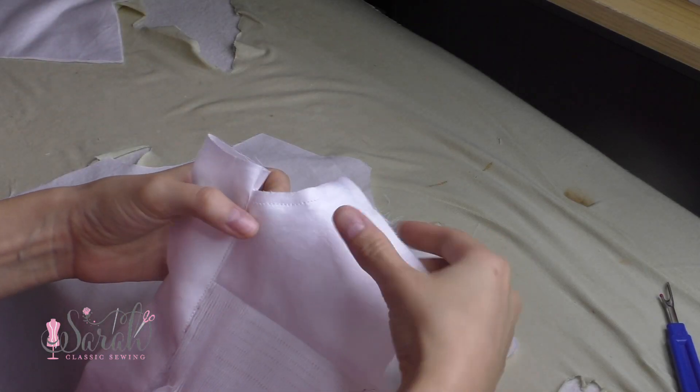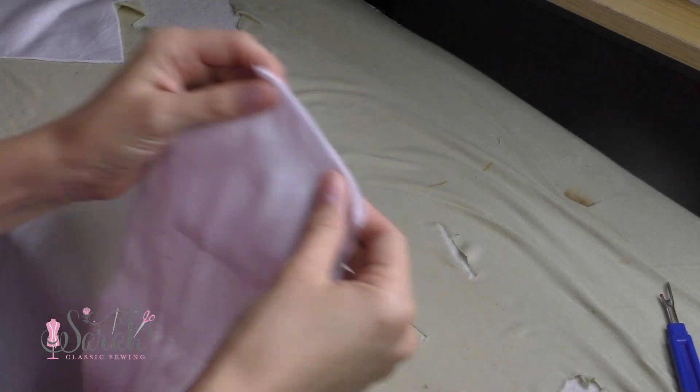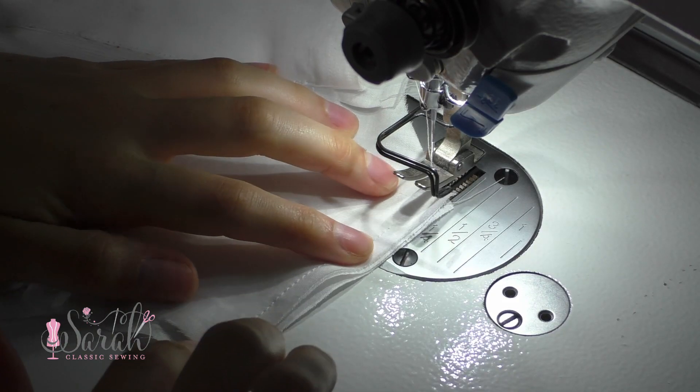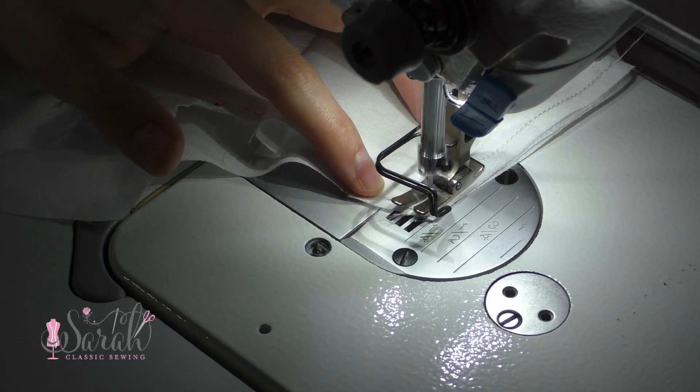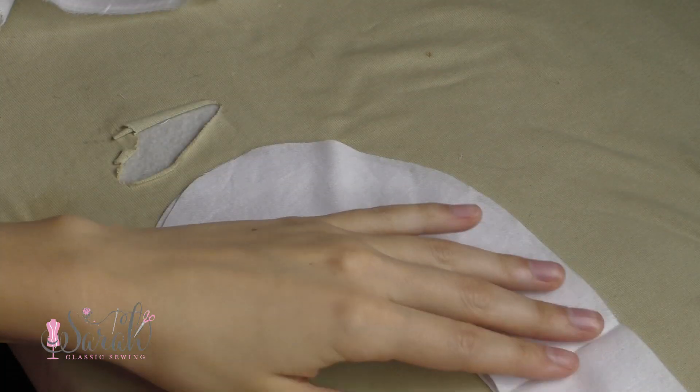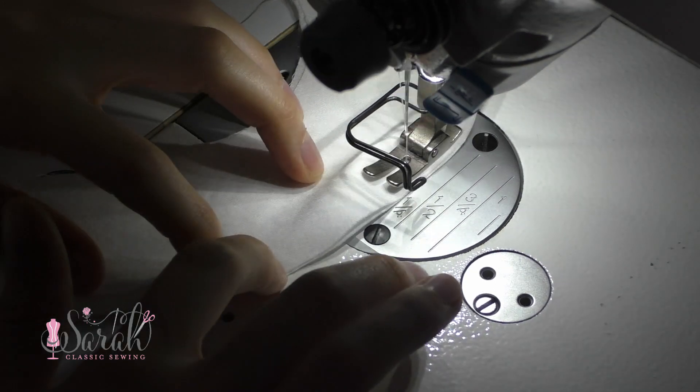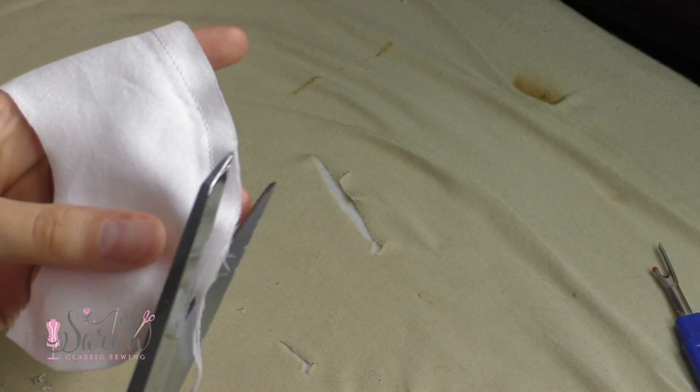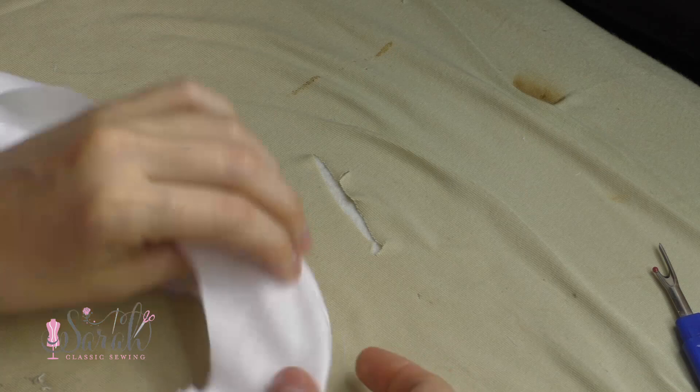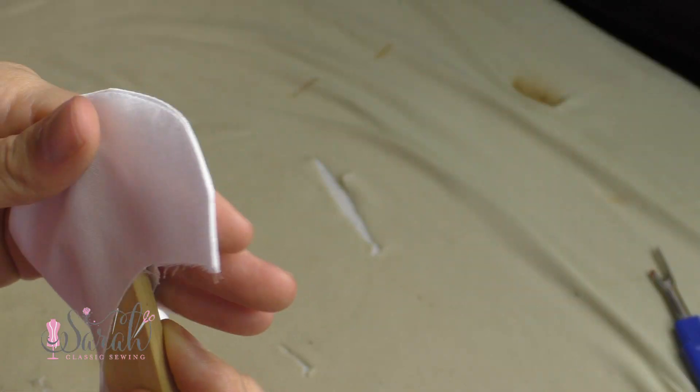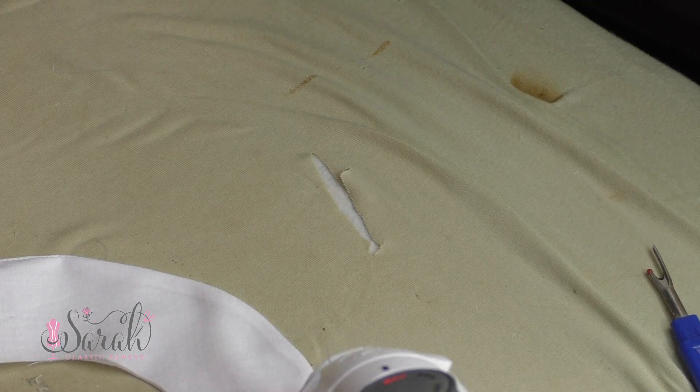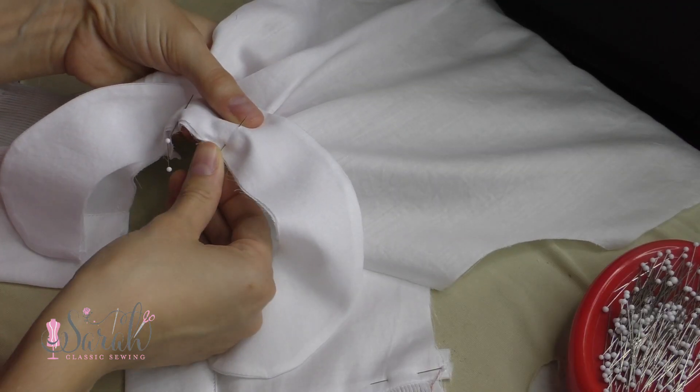Then I join the back of the shirt with the front of the shirt at the shoulder seams using French seams. And I have a detailed video linked down below on how to do French seams. So next I move onto the collar and sew the collar pieces together with right sides together. Then I turn the collar right sides out and use this little pointer tool linked down below to help push the seam out. I give the collar a really good ironing and then attach it to the neckline of the shirt.